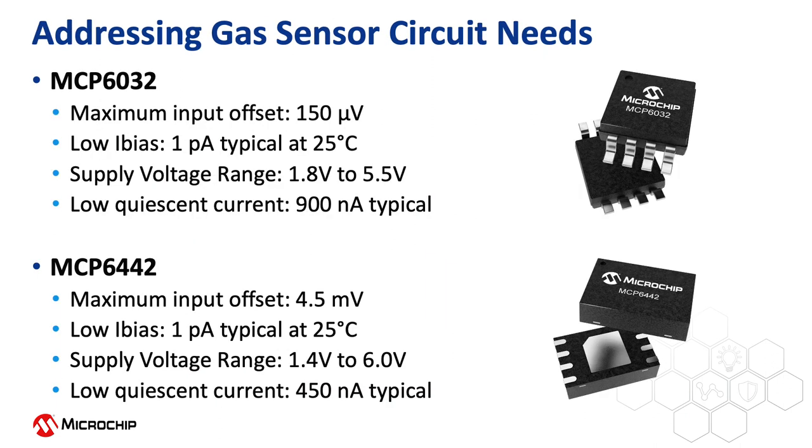Microchip offers a wide variety of operational amplifiers that are well suited for interfacing with both two and three terminal gas sensors. The MCP6032 precision amplifier provides low initial input offset and a CMOS input structure which enables low bias current. The MCP6442 operational amplifier provides a more cost-effective alternative, providing an even lower power solution, but with a higher input offset error.